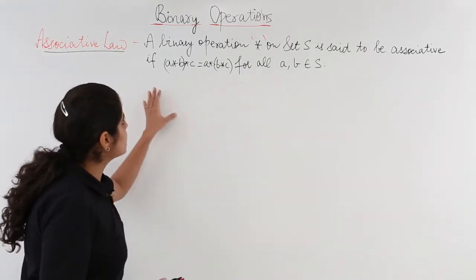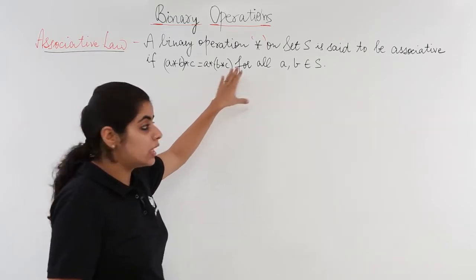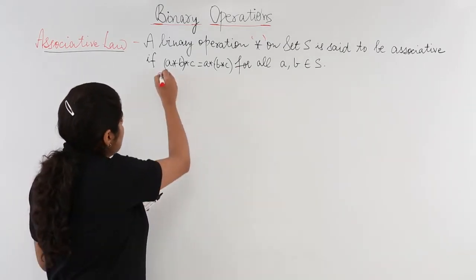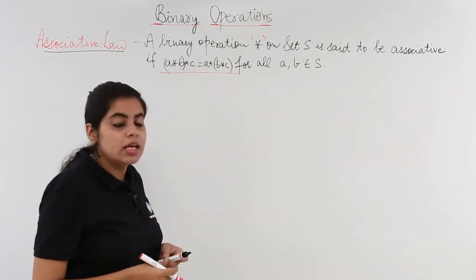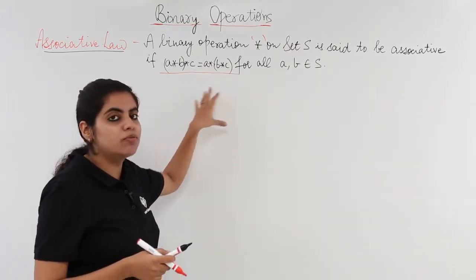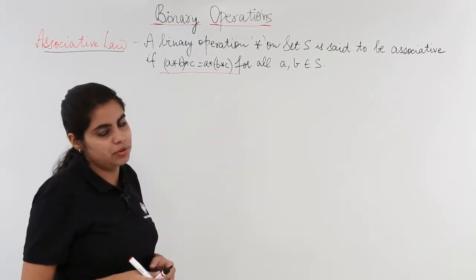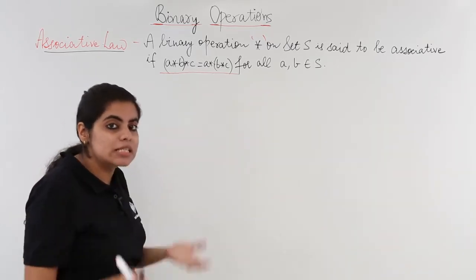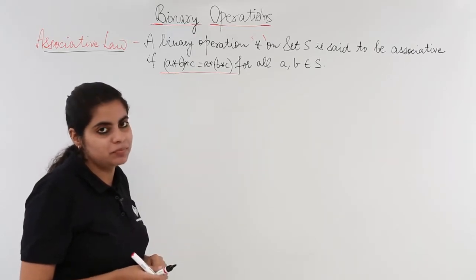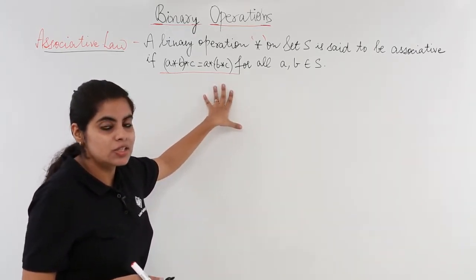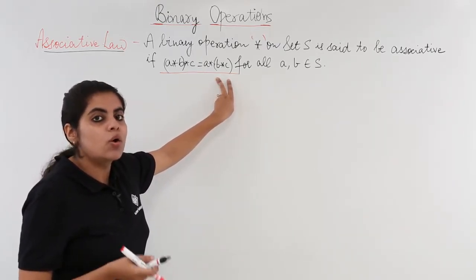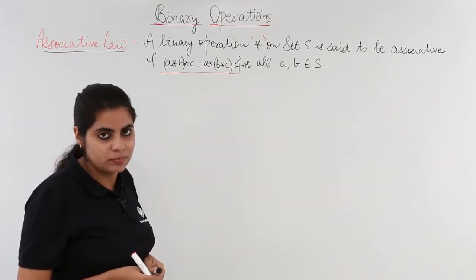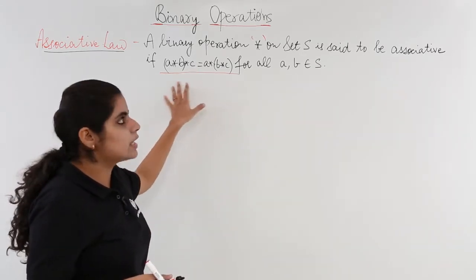Let's read it together. A binary operation star on set S is said to be associative if A star B star C is equal to A star B star C, but what is the difference? The order is different. In the first case, you solve A star B first because it has a bracket, and whatever result you obtain, you then operate it with C. But in the second side, you solve B star C first. Whatever result is obtained, you treat it with A. And these all A, B belong to the set S. That means the order is very much important.